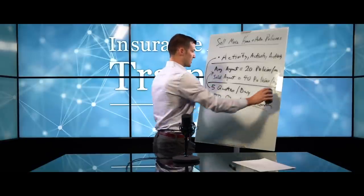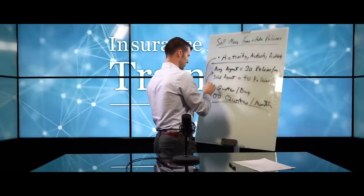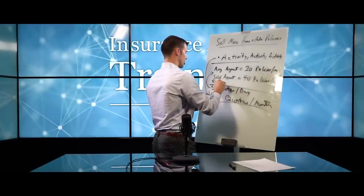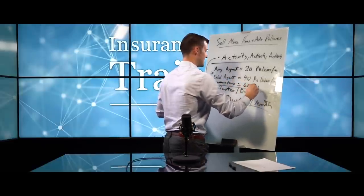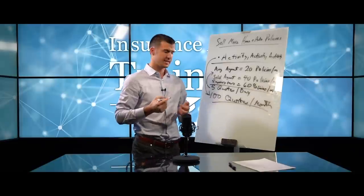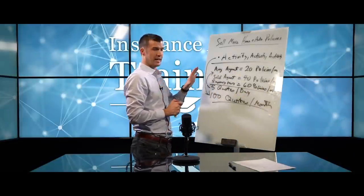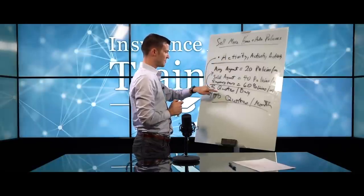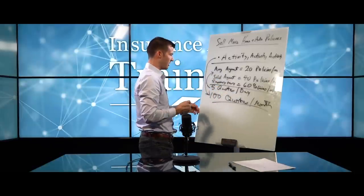Because I know some absolute superstar agents, some absolute superstars, that are writing 60 policies per month. 20 is the bare entry, it just really is. Because I've talked to enough agents in this field, I get what's going on. It's an activity place. That's where it starts. Then it leads to quotes. How many quotes are you doing per day? What's activity to make that a reality?